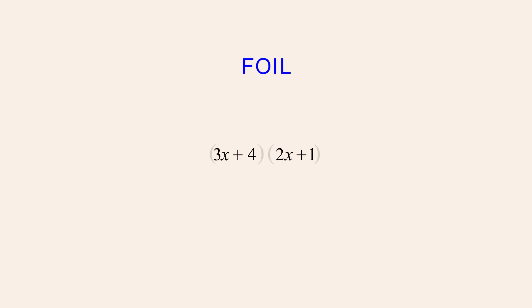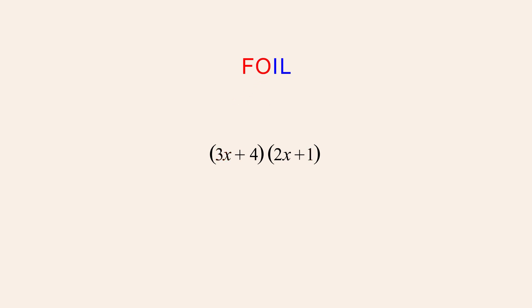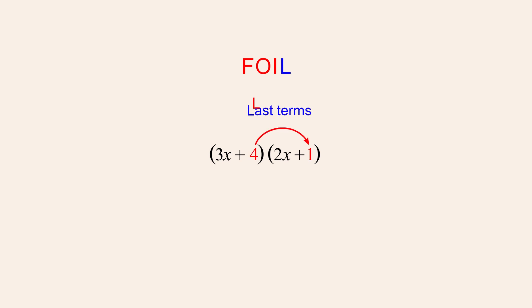In the lecture 'Creating Quadratic Expressions Using the FOIL Method,' we saw how to multiply two binomial expressions. FOIL is an acronym that reminds us to multiply the first terms of the two binomials, then the outer terms, then the inner terms, and finally the last terms. This acronym is an easy way to remember that each term in the first binomial must be multiplied by each term in the second binomial.